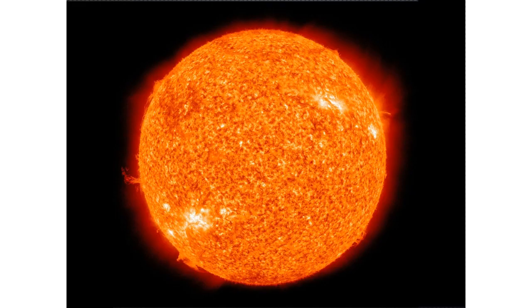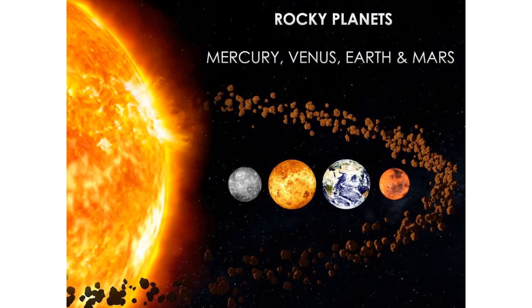Due to higher boiling points closer to the sun, only metals and silicates could exist in solid form. These formed the rocky planets: Mercury, Venus, Earth, and Mars.